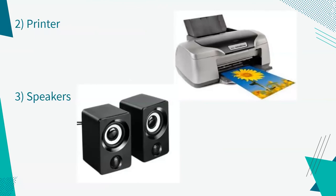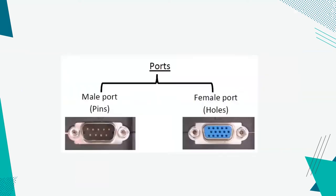We can also see a few more output devices which are the printer and speakers. Now I'm going to talk about the ports. The ports are in the back of the CPU. We have two types of ports in a computer, which are male ports and female ports. In the male port you can see pins, and in the female ports you can see holes.